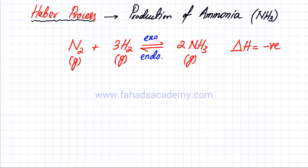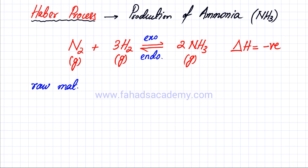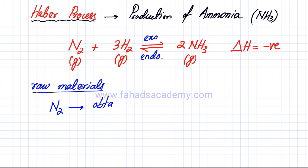This reaction is slightly more complicated when we consider how it would be performed at an industrial scale. The first thing we need to know is where do we get these raw materials. The raw materials are nitrogen and hydrogen. Nitrogen is obtained from air — the most abundant source — specifically by fractional distillation of liquid air.